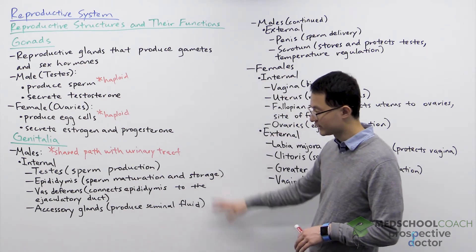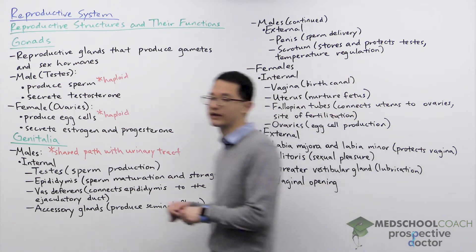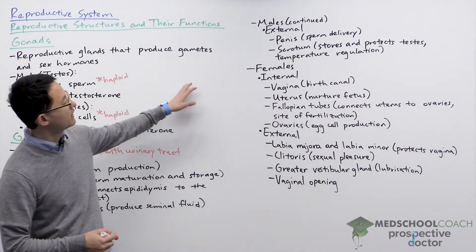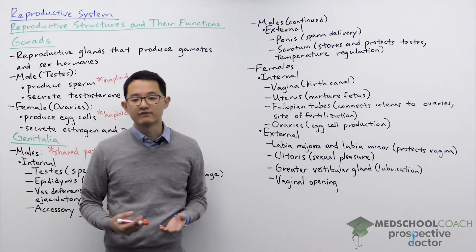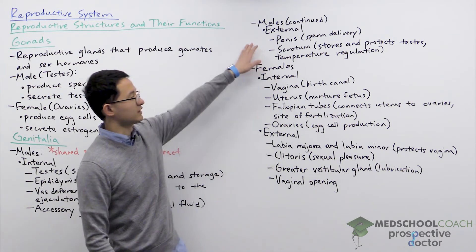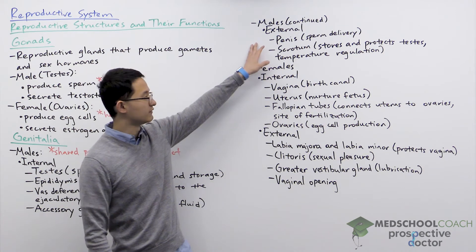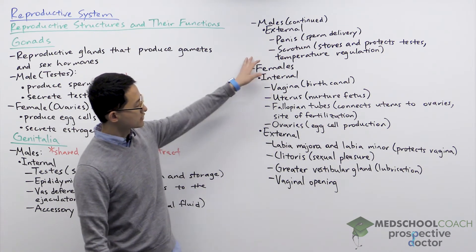These are the internal male genitalia. We can now look at the external male genitalia. This includes the penis and the scrotum. The penis of course is important for sexual function and for delivering sperm within females. We also have the scrotum.